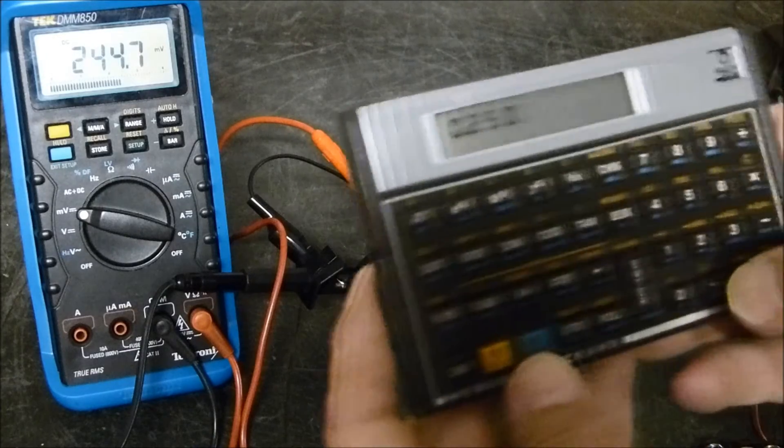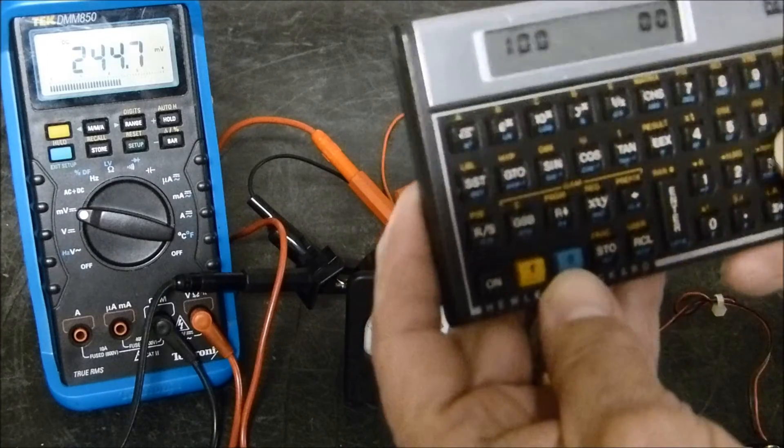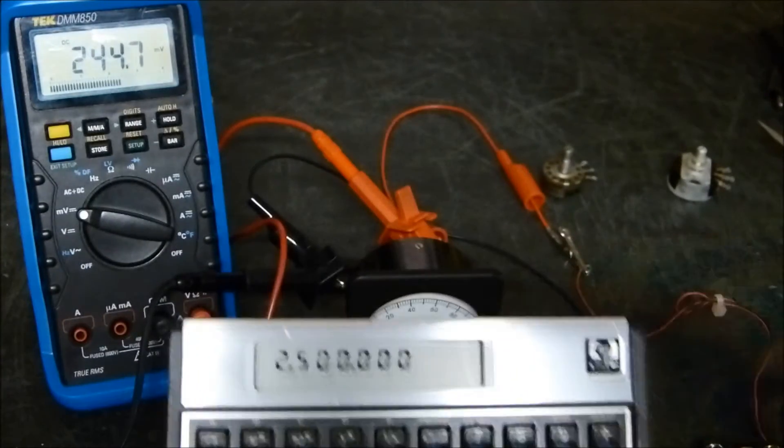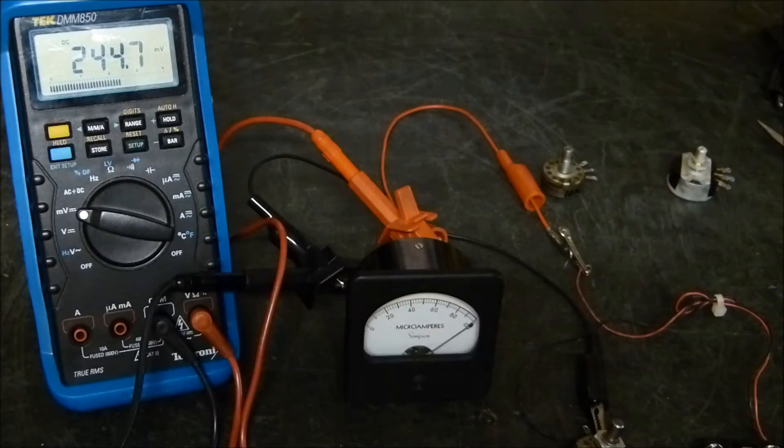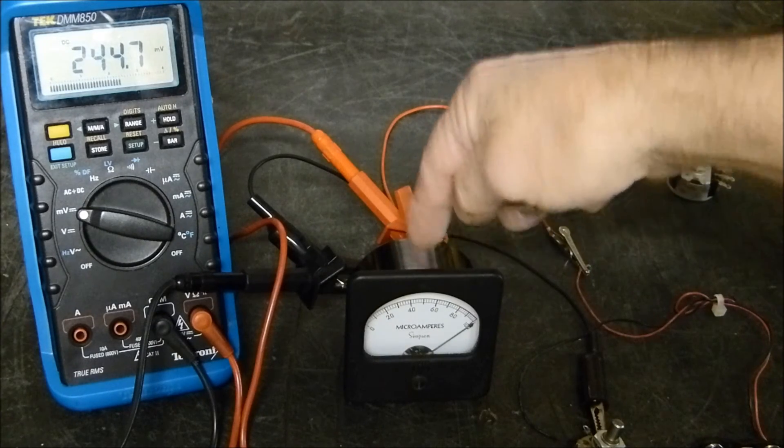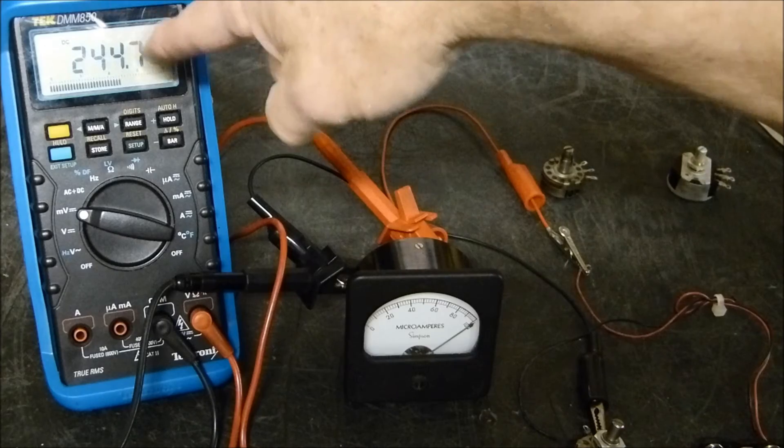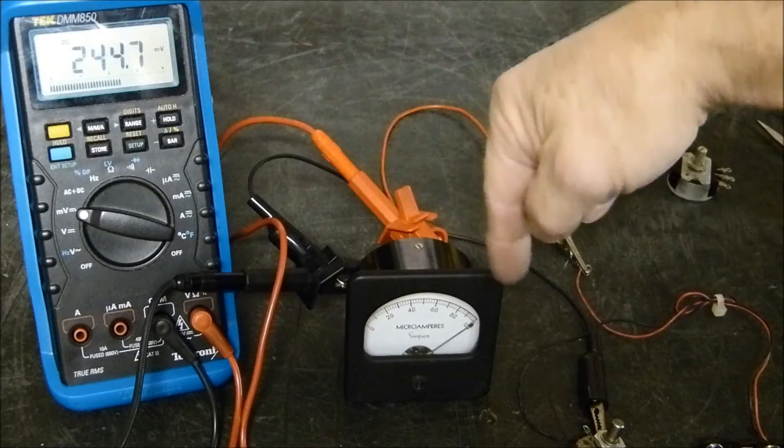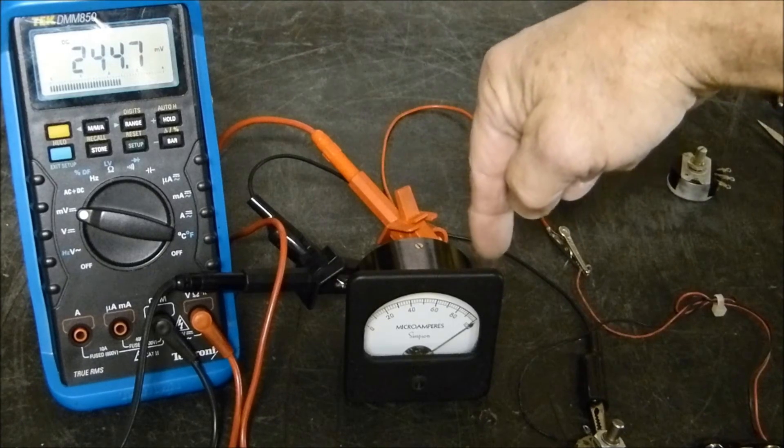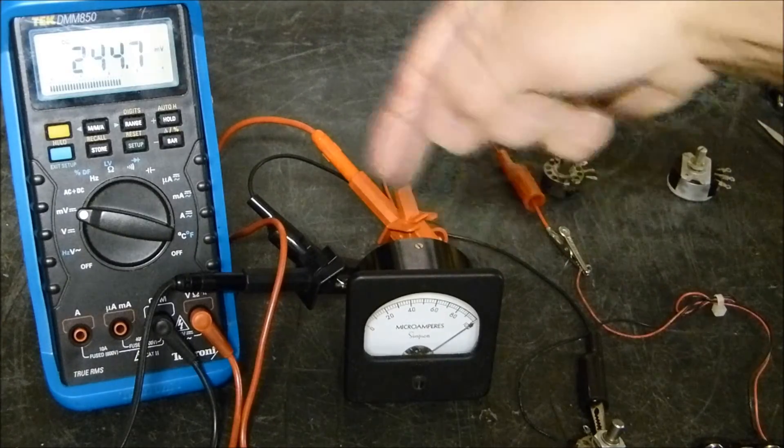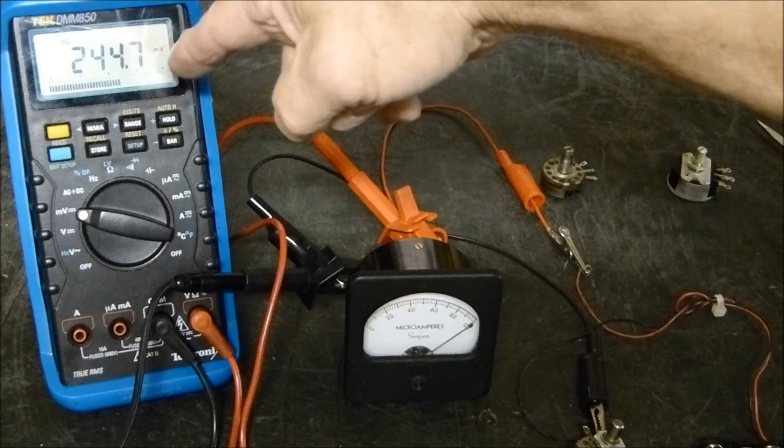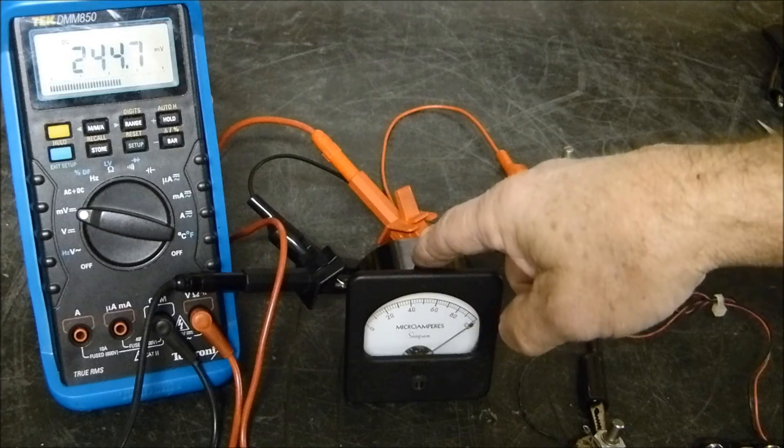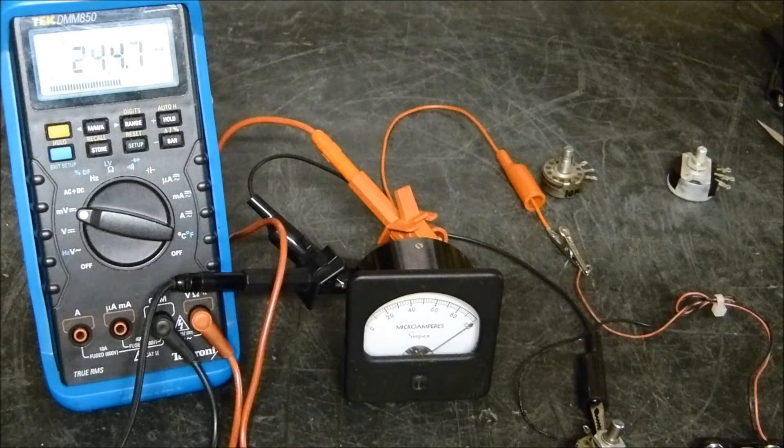So that's a 2500 ohm meter, 100 microamp, 2500 ohms, takes a quarter of a volt to make it read full scale. So if it's a quarter of a volt at 2500 ohms, to convert it to ohms per volt you would multiply the quarter of a volt times 4, and you'd have to multiply this times 4, so it'd be a 10,000 ohms per volt.